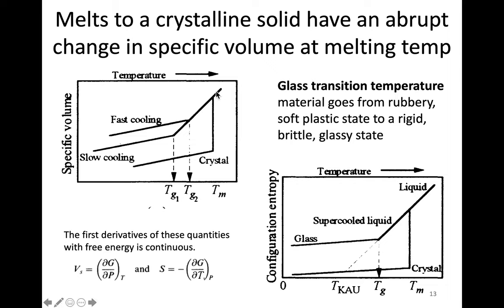However, if that same material keeps cooling and it doesn't crystallize, then it's going to become an amorphous material. You can see here that it continues to decrease in volume as we decrease the temperature, and then it splits off again into slow cooling and fast cooling. There is a transition which is much more subtle — it's basically a slope change. If this material is fast cooled, you see the slope change at this temperature labeled Tg2. And if it's slow cooled, you see the slope change occurs at a lower temperature.